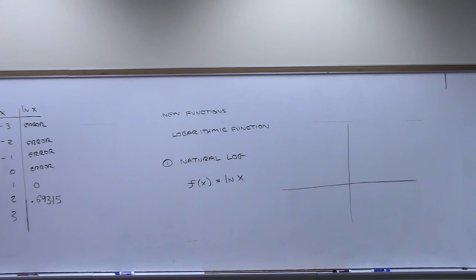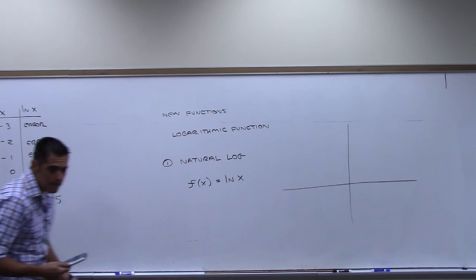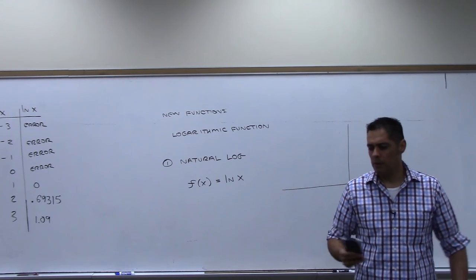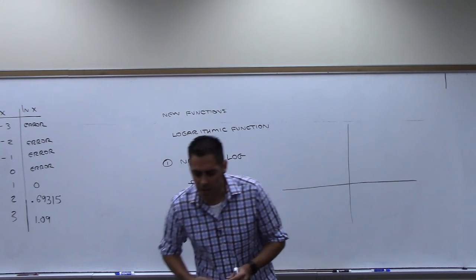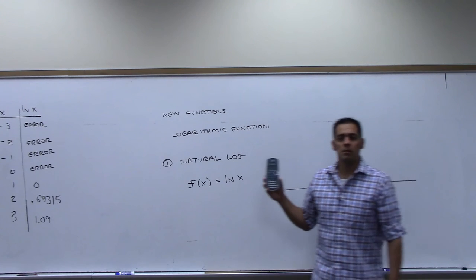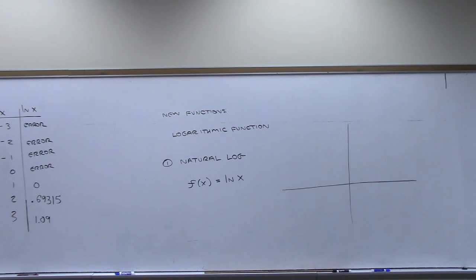Natural log of 3 is 1.09. We can keep going with this — you don't have to put them everywhere. Wait, what did you press? Oh, you're using LOG, not the one below it. The one below it — it looks like IN but it's LN. There you go. Put 1 in and then enter, you get 0.